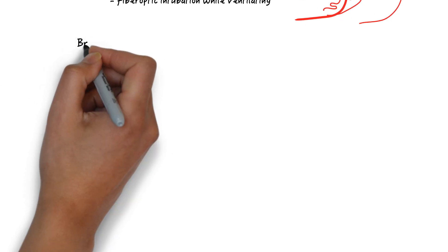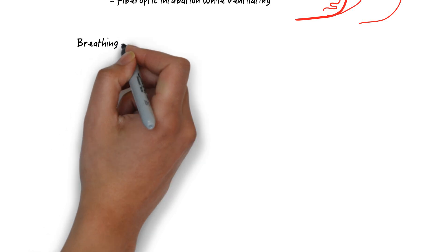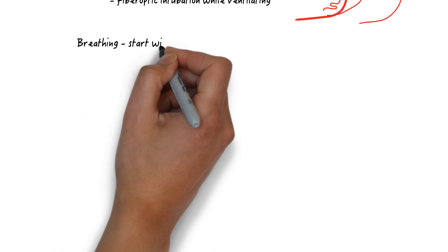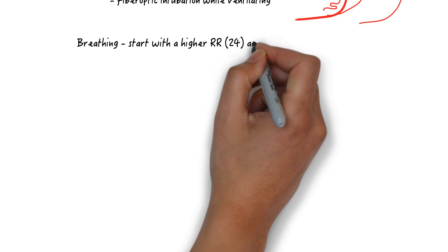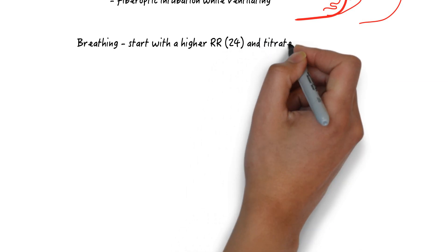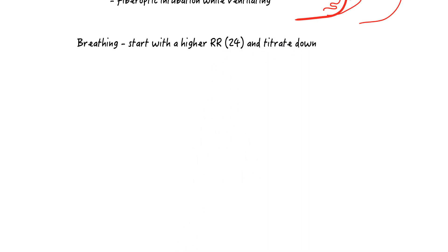The most important part of breathing is to not set this patient on the typical respiratory rate of 12 on the ventilator. Start high with a respiratory rate of 24 or above and titrate down as necessary.